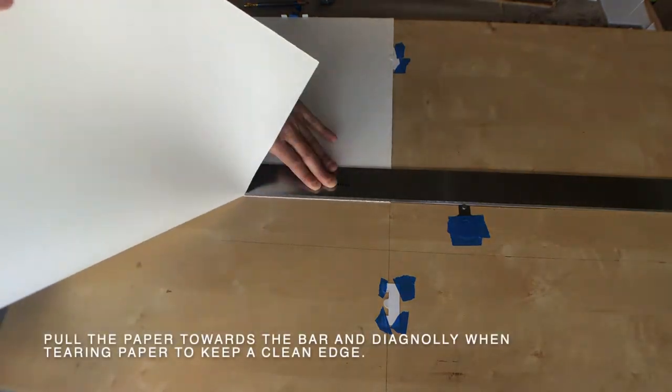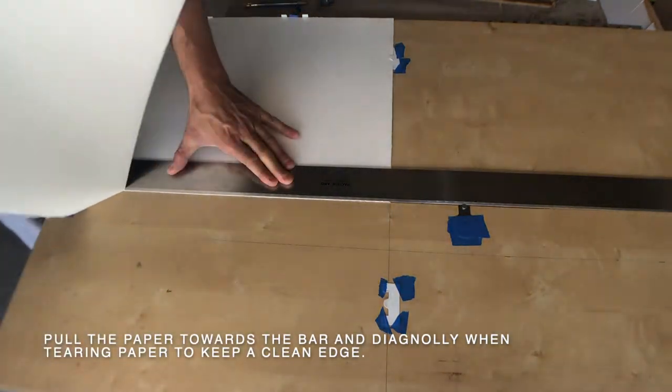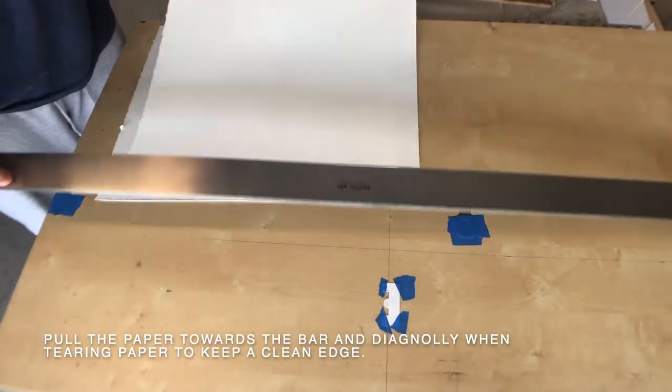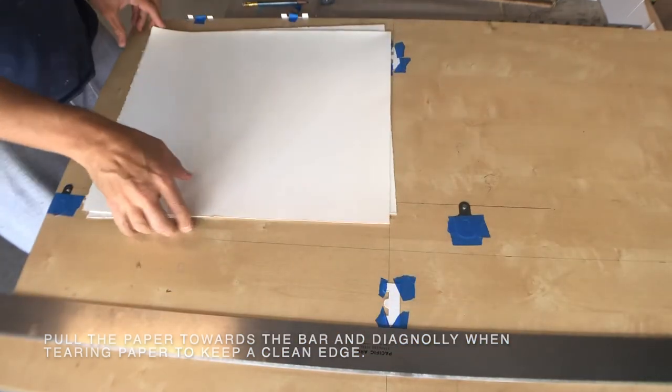When I tear, I want to pull the paper up and over my shoulder and diagonal, so that I get a really clean tear on the paper.